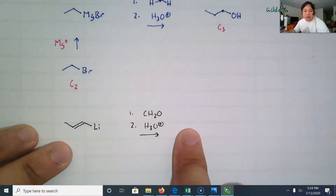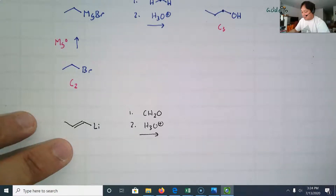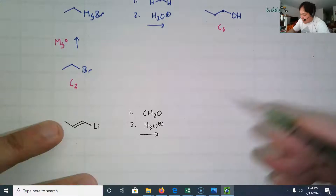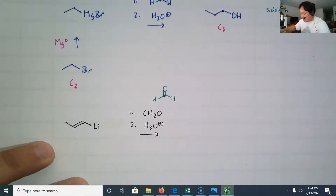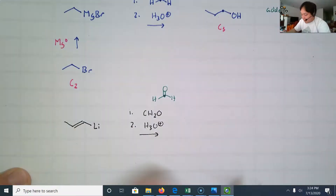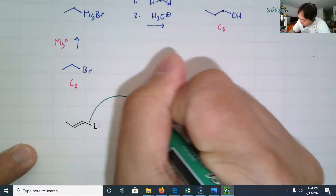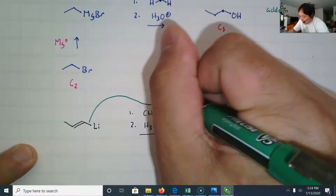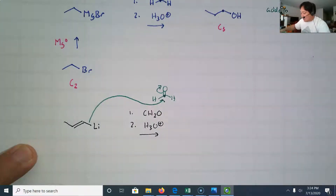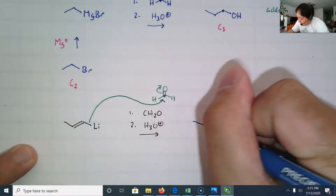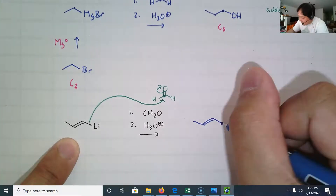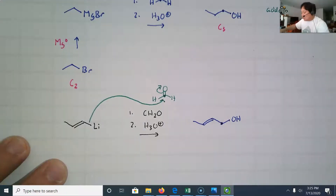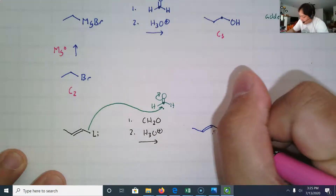Pause the video and write your answer, then unpause to double check. On an exam I would draw out the aldehyde, put a dot, and note that dot is going to be connected to the carbon on the organolithium. You attack that carbon and kick up the pi bond. After the second reaction you protonate, giving you that carbon attached to an OH. What we added was a CH2OH group — that's the bond we made.